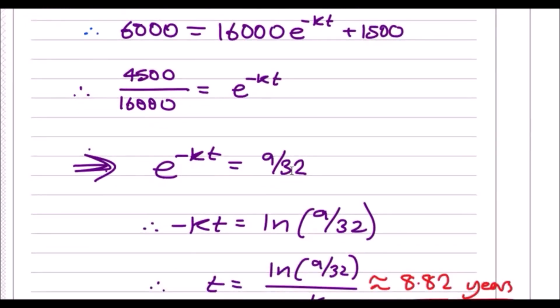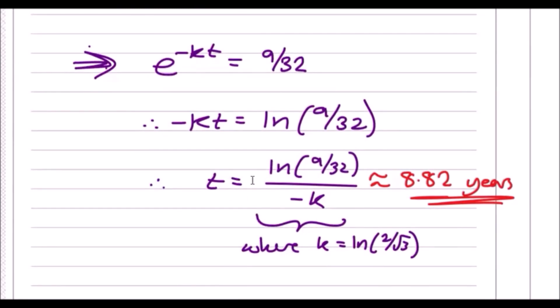Make the e value the subject, taking ln on both sides so e and ln cancel out. You're left with minus kt equals ln 9 over 32. Divide by minus k to get the value t. Now put the value k back in, which was ln 2 over root 3. Smash it all in the calculator and you should get about 8.82 years.